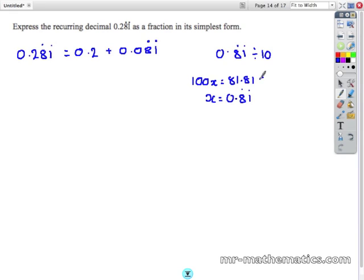Now we work out the difference between the two. So 99x equals 81, and x will equal 81 over 99.